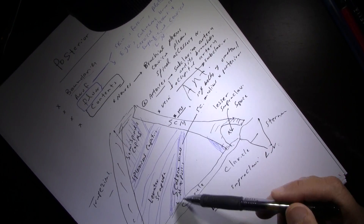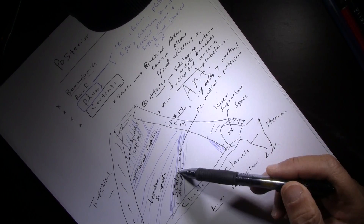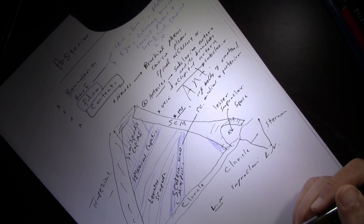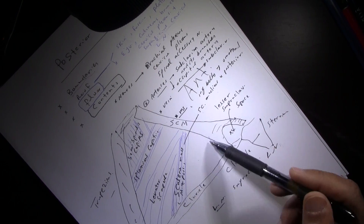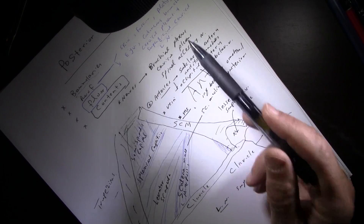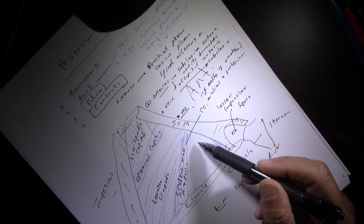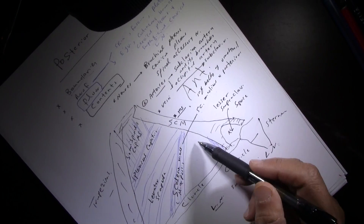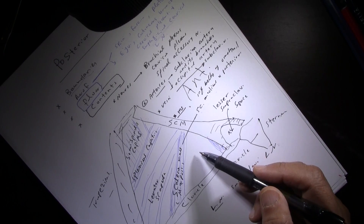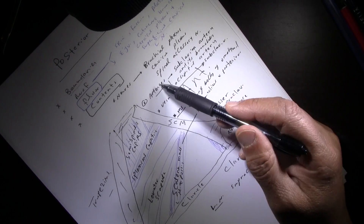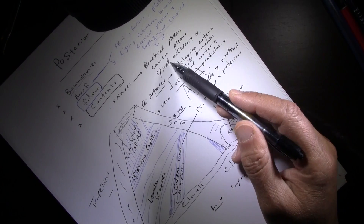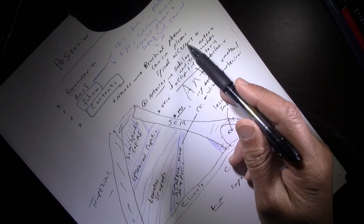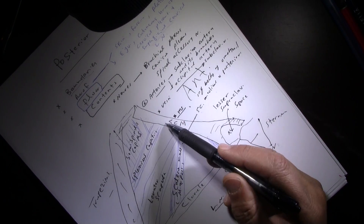The floor of the triangle is made of the scalene mass (scalenius posterior and medius), levator scapulae, splenius capitis, and semispinalis capitis. The contents importantly include the brachial plexus — the nerve supply for the upper extremity — the cervical plexus giving sensory branches and supplying neck muscles, and the spinal accessory nerve, which lies in the deep surface of the roof and supplies the sternocleidomastoid and trapezius, traveling between these two muscles.